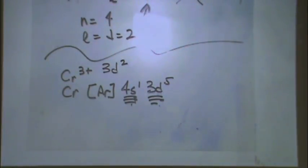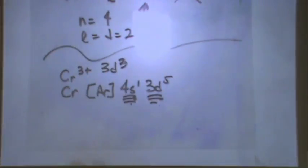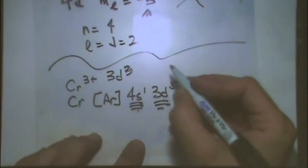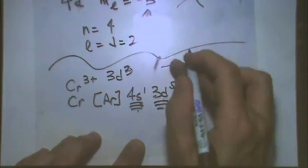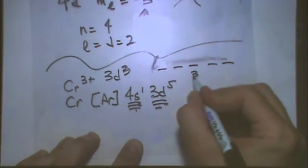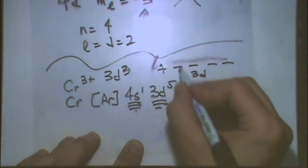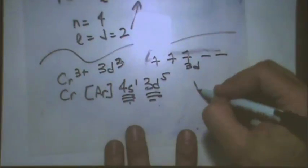In this case, is that para or diamagnetic? If you're not sure, you need to write out the electron configuration for the D orbitals. There's five of them. Here's the 3Ds. Then you have 1, 2, 3. They're all unpaired. If you have at least one unpaired, this is called paramagnetic.